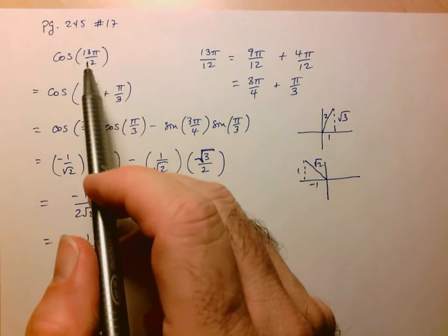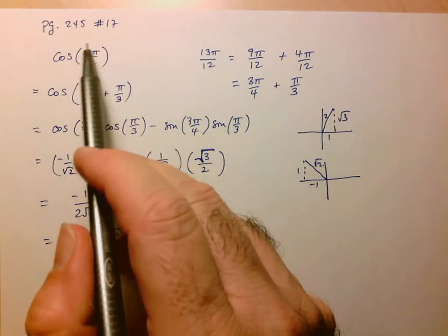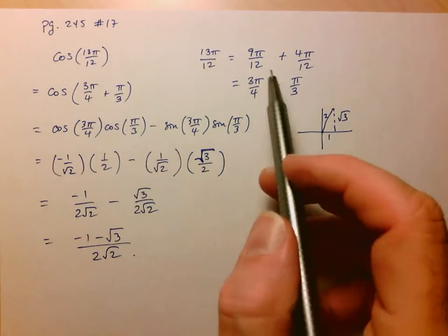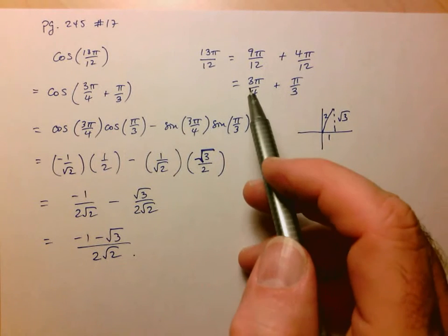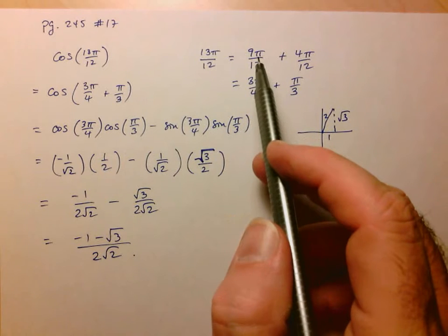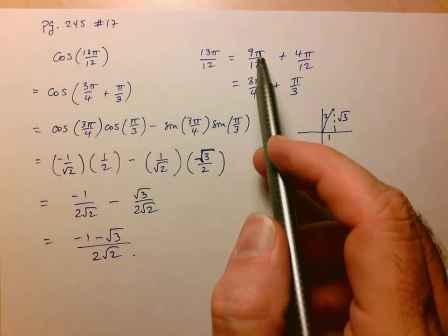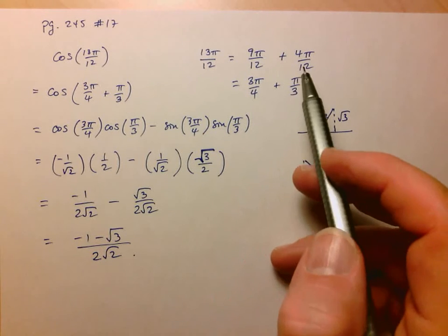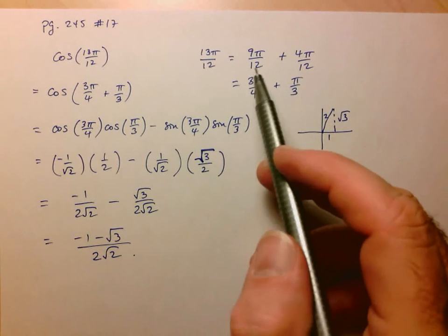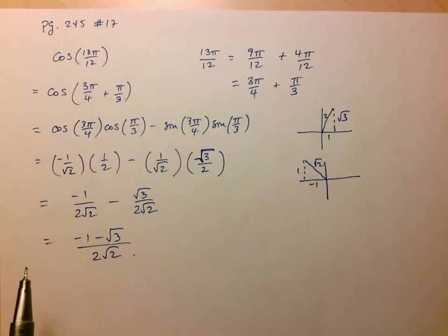So just to recap, when you see an angle like this, you want to try to write it as a combination of special angles. I chose 9π over 12 plus 4π over 12. So, you know, 10π over 12 which is 5π over 6 plus 3π over 12 which is π over 4, that would have worked also. So there's more than one combination that might work.